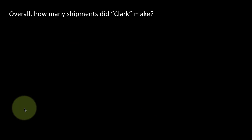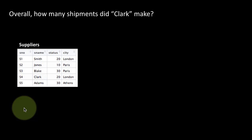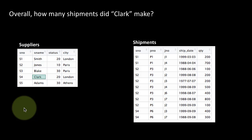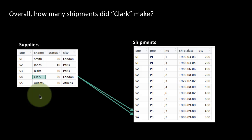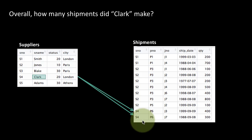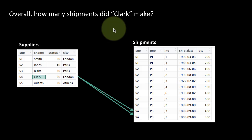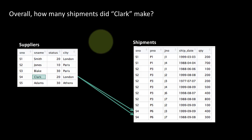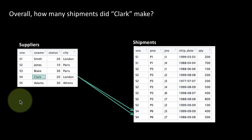Another question: overall how many shipments did Clark make? Clark, as we can see, is S4. We go into the shipments table and see there are only two rows where the supplier is S4, and therefore we can answer: Clark made two shipments. We are assuming all of the tables are complete with no other rows than what we are showing. In reality these things are likely to be very big, but to get the concepts clear it's better to look at something where we can see the whole picture.